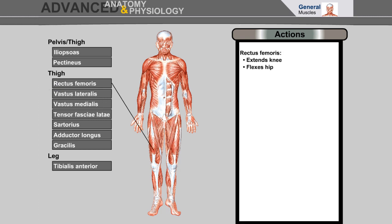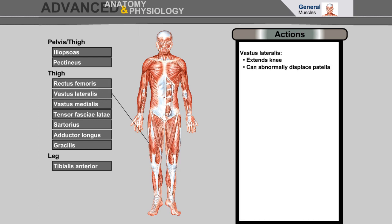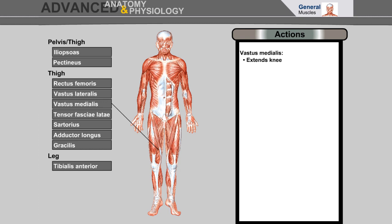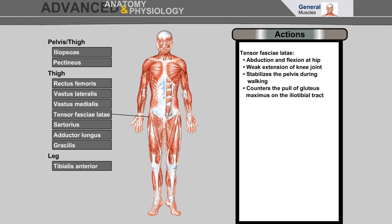Rectus femoris extends the knee and flexes the hip. Vastus lateralis extends the knee and can abnormally displace the patella. Vastus medialis extends the knee. Tensor fasciae latae: abduction and flexion at the hip, weak extension of the knee joint, stabilizes the pelvis during walking, and counters the pull of gluteus maximus on the iliotibial tract.